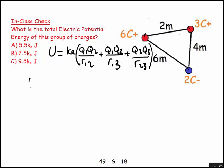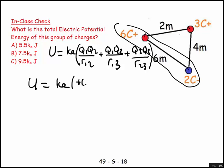So U is equal to ke, and then let's just go through these. Let's do this first one to begin with. So this would be plus six times minus two. Better put curly brackets in here because ke applies to everything. So that's plus six and minus two and the separation is six.